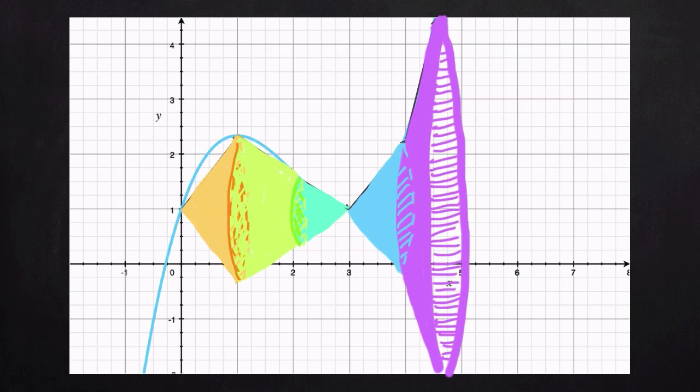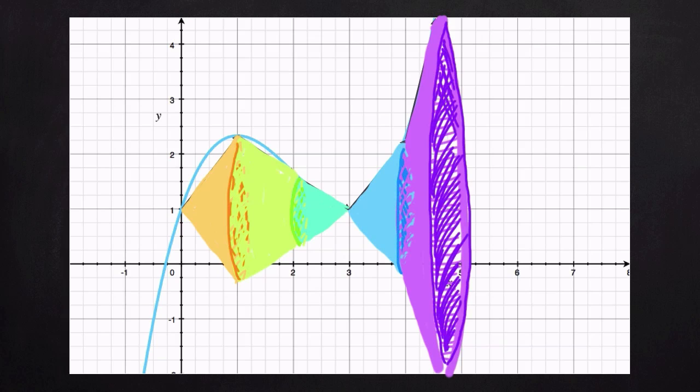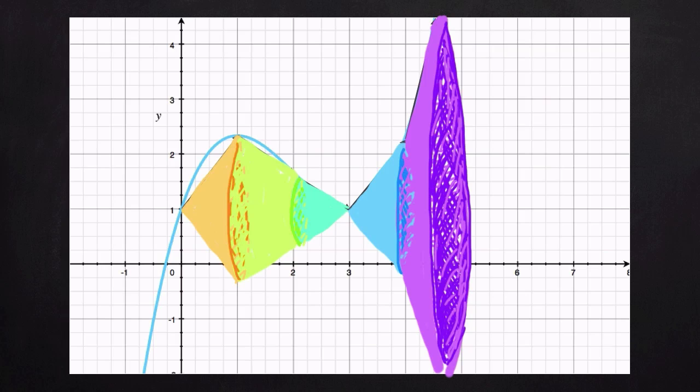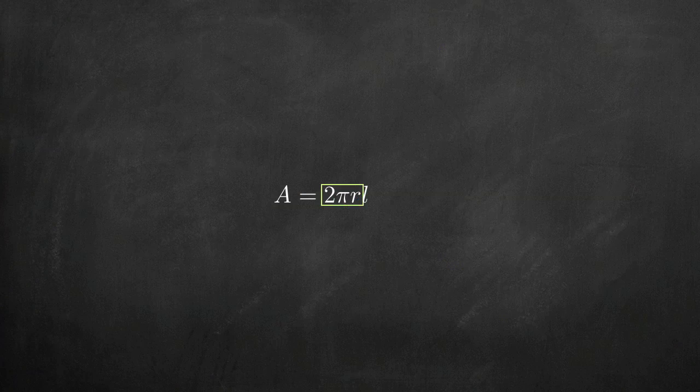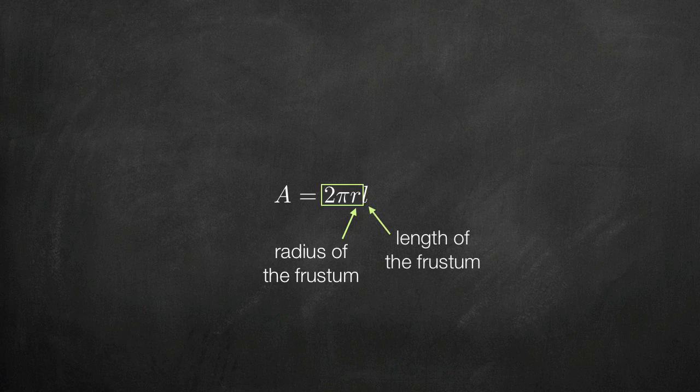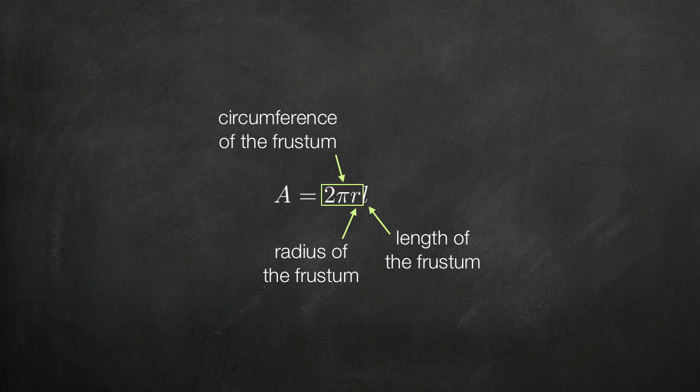Each of these segments is called a frustum. To find the surface area of one frustum, we use the formula A equals 2 pi r l, where r is the radius of the frustum, and l is the length of the frustum. This should make sense since we know that 2 pi r gives the circumference of a circle. So multiplying that value by the length of the frustum would give us the surface area.